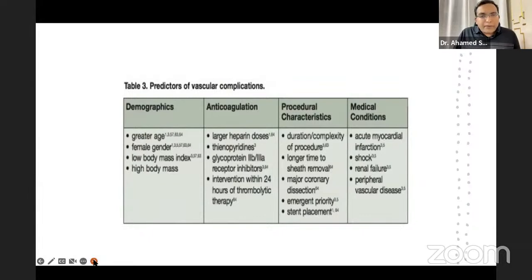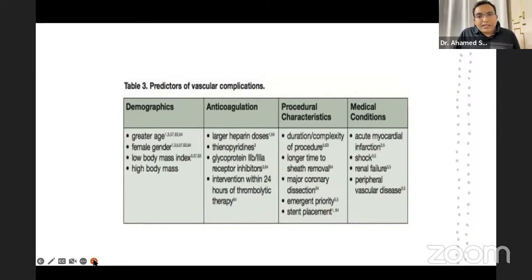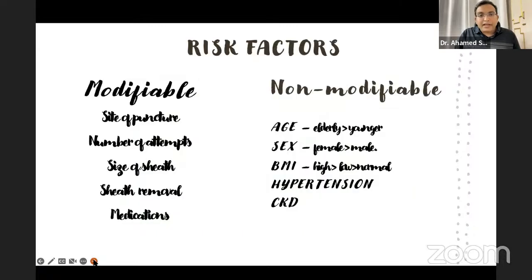Can we predict vascular complications before the procedure? Yes. Non-modifiable factors include increased age, female gender, and extremes of body mass index — both low and high — which are more prone to vascular complications. Use of anticoagulation adds to risk. Procedural characteristics such as complexity of the procedure, time for sheath removal, and stent placement also contribute. CKD, hypertension, and heart failure are also predictors of vascular complications during femoral puncture.